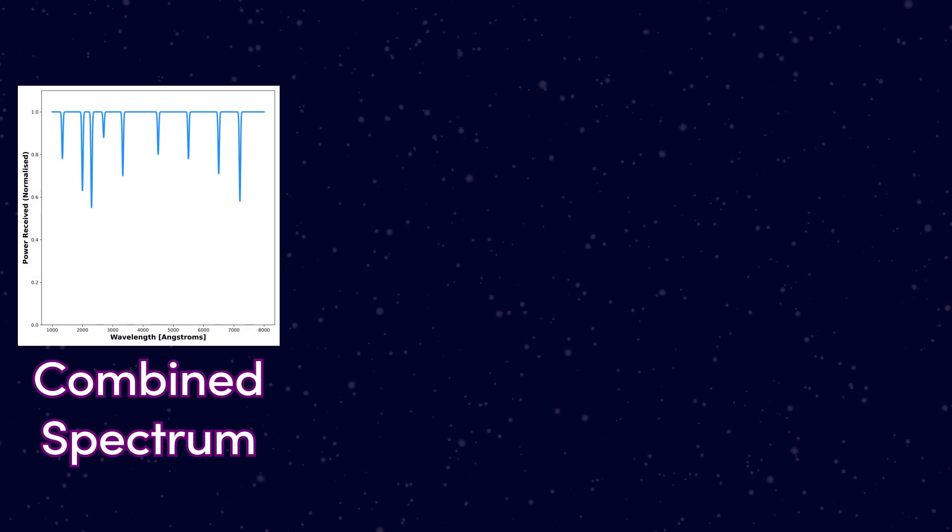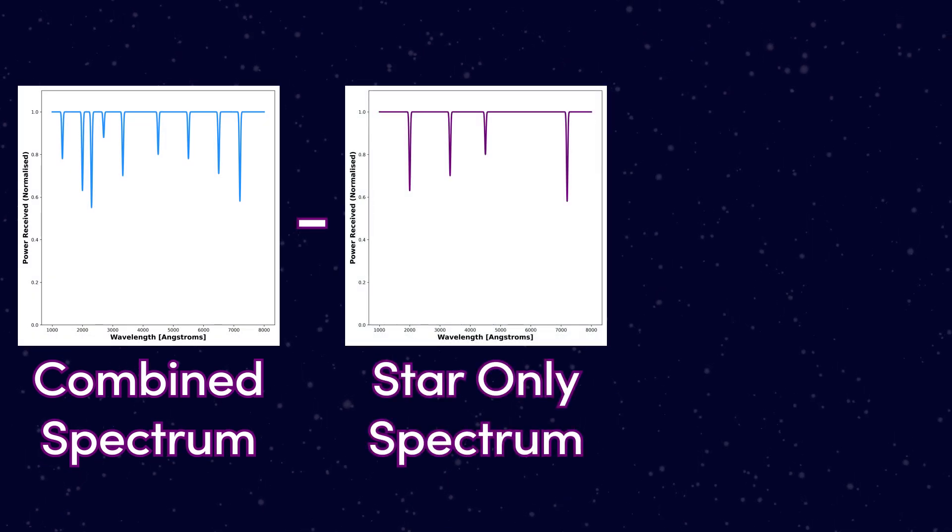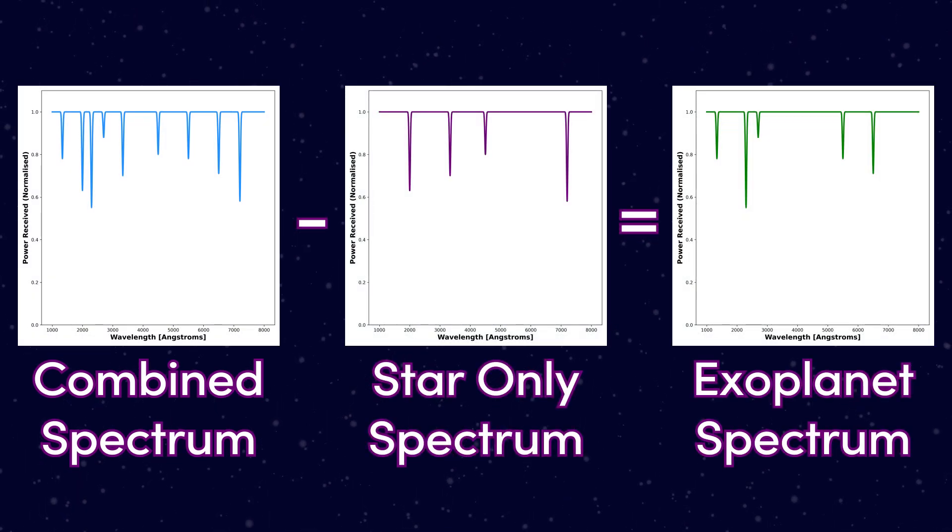It could be analyzing its spectrum to see what it's made of. It could be combining loads of different observations of the same object to look for exoplanets in the light curves of stars.